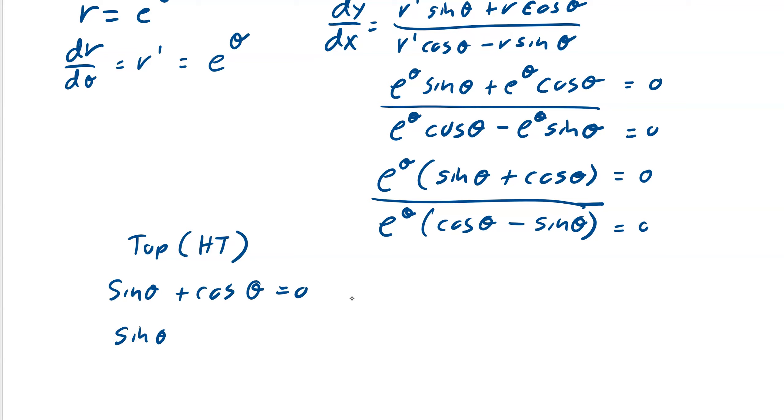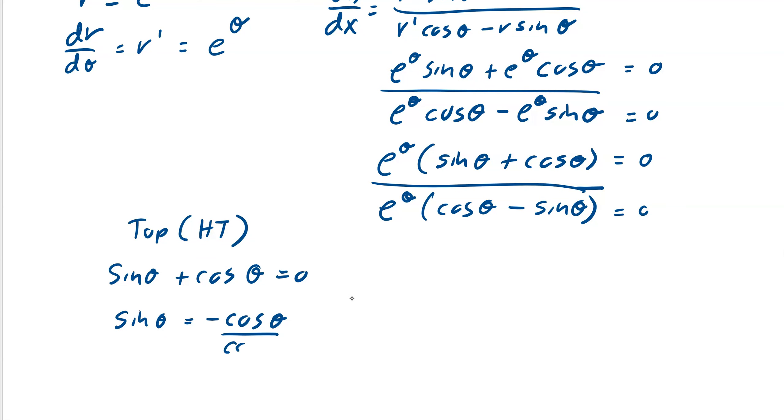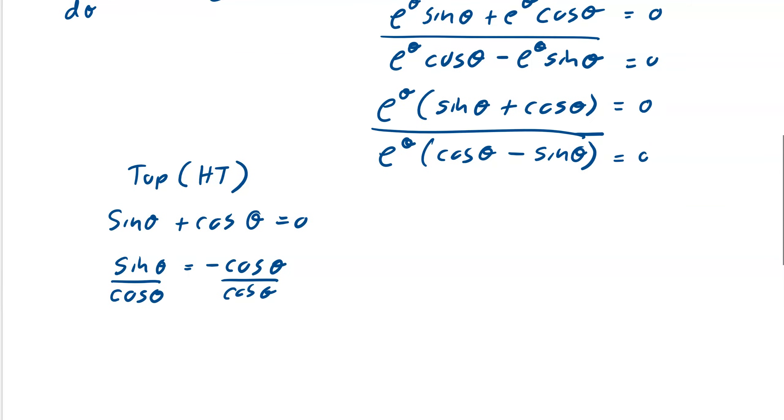We get sin θ plus cos θ is equal to zero. So we get sin θ equals negative cos θ. And then we divide by cos θ. What we're trying to do is create tan θ. Anytime you see that sine plus cosine, we would get now tan θ equals negative 1.